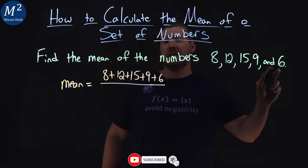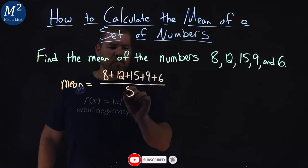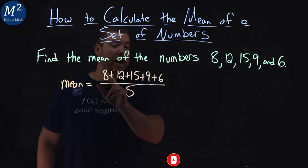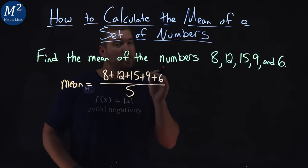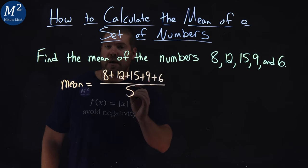How many do we have? 1, 2, 3, 4, and 5. So again, we have the sum adding up all the numbers that we're trying to find the mean of divided by how many numbers that we have.